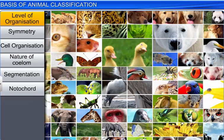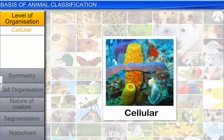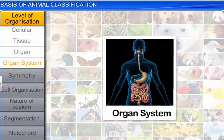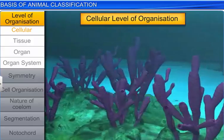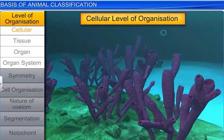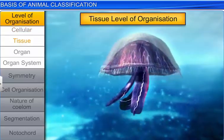Level of organization is the first basic fundamental feature that deals with the pattern of cell organization in an animal. There are four patterns of cell organization: cellular, tissue, organ, and organ system. Sponges exhibit a cellular level of organization, where cells are loosely arranged. Tissue level of organization is more complex, and is displayed in coelenterates, where cells that perform the same function are arranged into tissues.